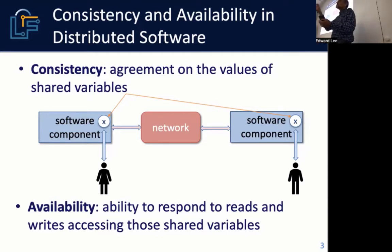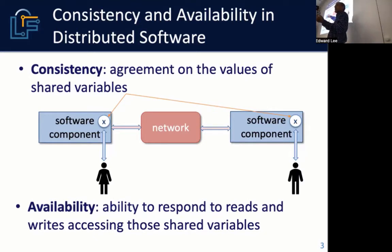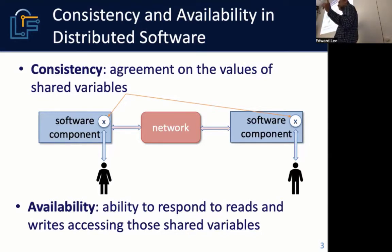If your business decision is that you want no risk of the balance going negative, that's a strong consistency requirement. That means a component cannot dispense cash until it has established the bank balance in agreement with all the other components. Systems designed with that strong consistency property will also have the property that if the network breaks, you lose availability.